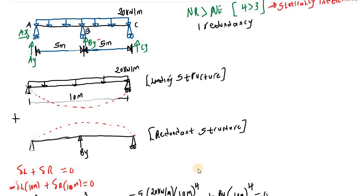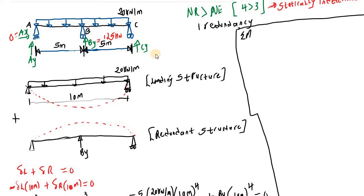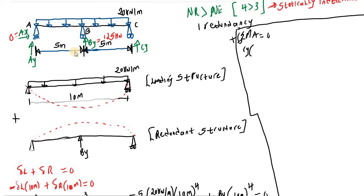Now that By equals 125 kilonewtons, we can calculate the remaining reactions using equilibrium. Ax is automatically zero because there is no horizontal force acting on the beam. We take the summation of moments at point A equals zero, with counterclockwise moments positive and clockwise moments negative. Cy acts upward and its moment arm to point A is 10 meters, so we have positive Cy times 10 meters.